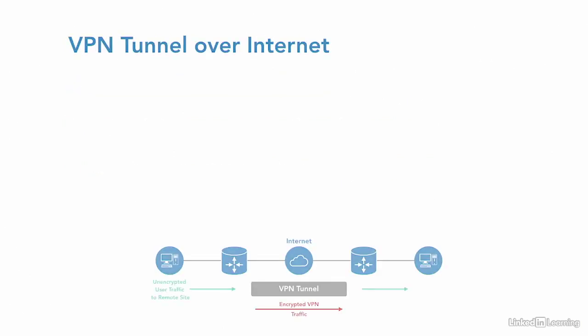I'll use the Internet for this example. A remote office will create a secure tunnel between itself and the central office. When doing so, the two routers will create what's called a VPN tunnel.